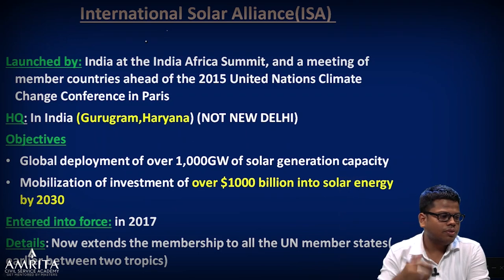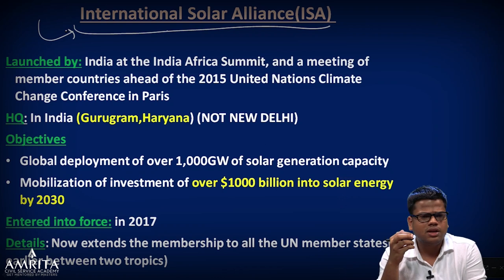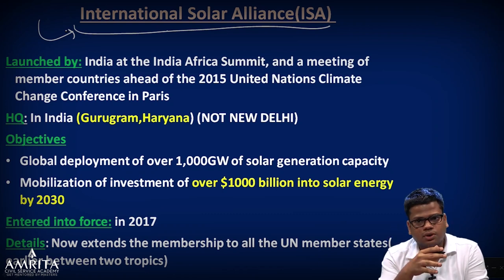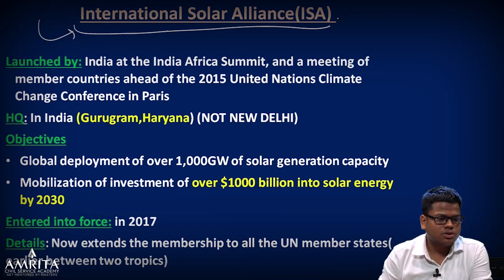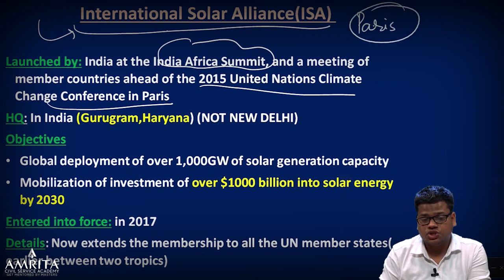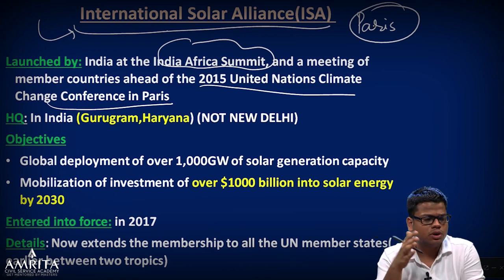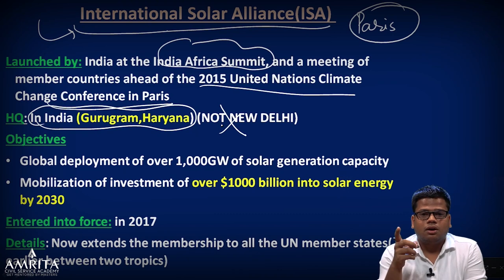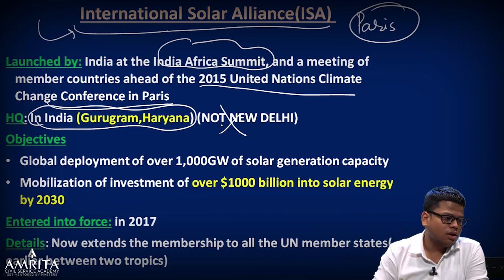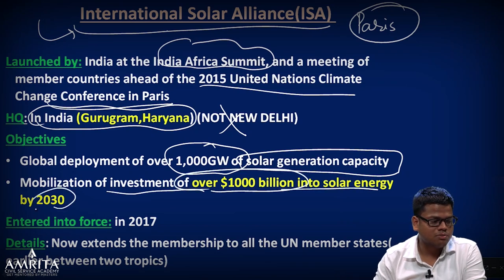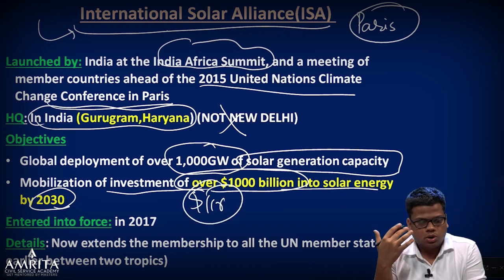Now the International Solar Alliance. Recently the Economic Survey mentioned India's efforts on renewable energy. ISA was launched at the India-Africa Summit before the COP21 conference in Paris. For India it is significant because ISA is headquartered in Gurugram, Haryana — the first major international organization to have its headquarters in India. Objectives: global deployment of 1,000 gigawatts of solar generation capacity and mobilization of over one trillion dollars in solar energy investment by 2030.